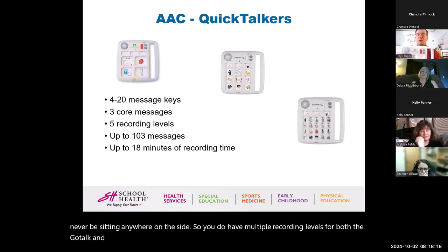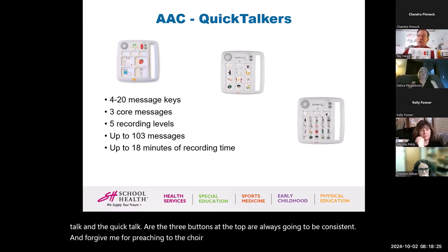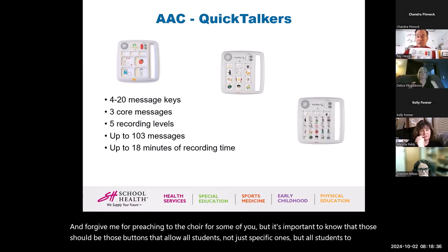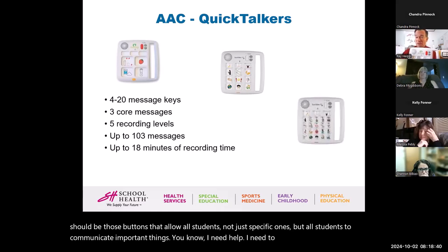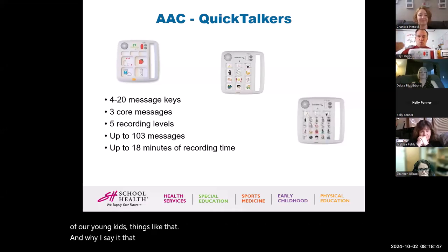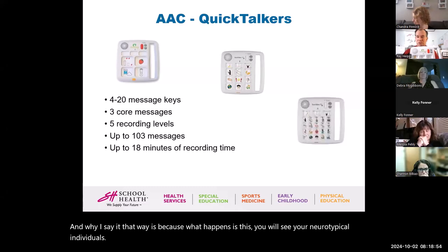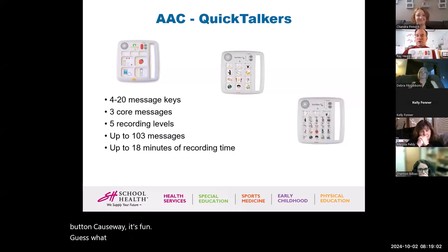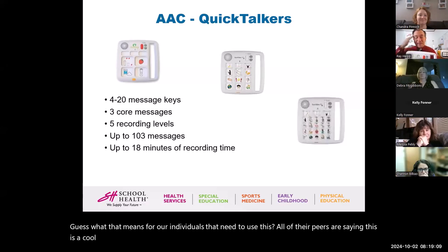For both the GoTalk and the QuickTalker, the three buttons at the top are always going to be consistent. It's important to know that those should be buttons that allow all students — not just specific ones — to communicate important things: I need help, I need to go to the bathroom. What happens is your neurotypical students, when they want to go to the bathroom, will pick this up and press the button because it's fun.